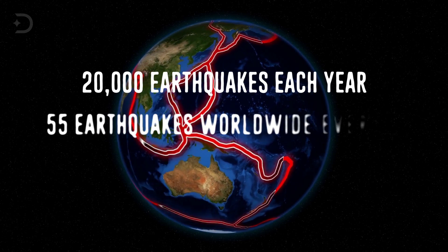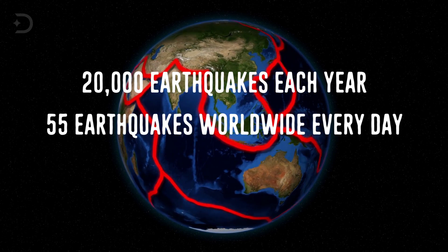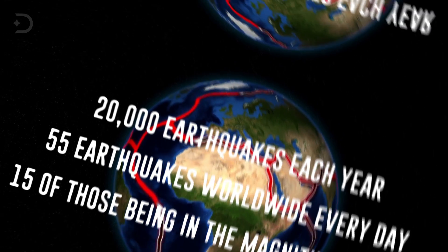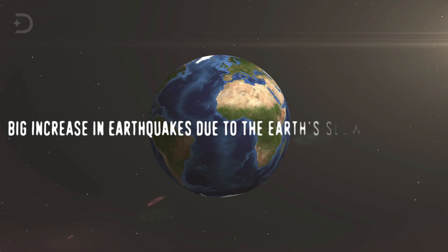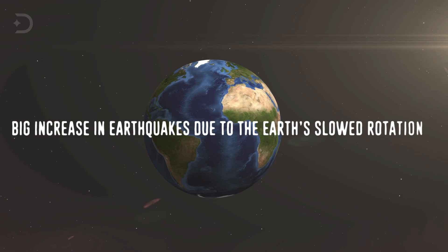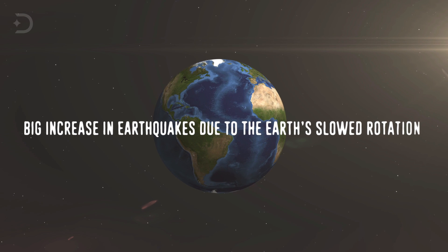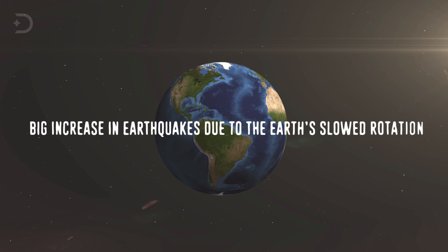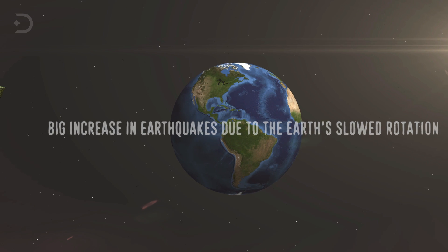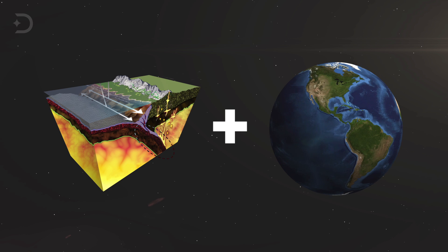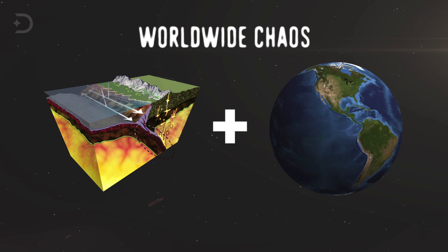That's 55 earthquakes worldwide every day, with around 15 of those being in the magnitude 7 range. Scientists have warned that there could be an increase in earthquakes due to the Earth's slowed rotation. The link between Earth's rotation and seismic activity is strong and suggests there is going to be an increase in numbers of intense quakes. If the Earth is pulling in more water in the subduction zones, the slower rotation combined with this could cause worldwide chaos.